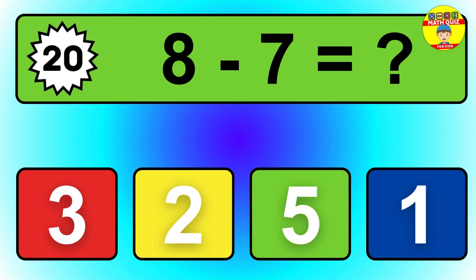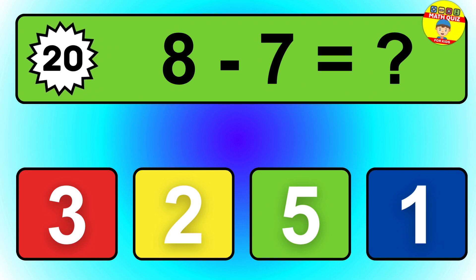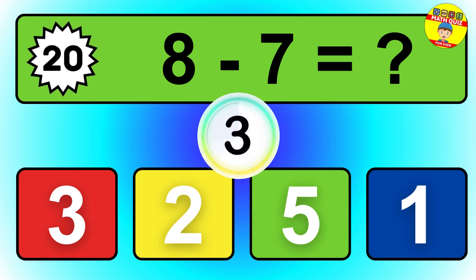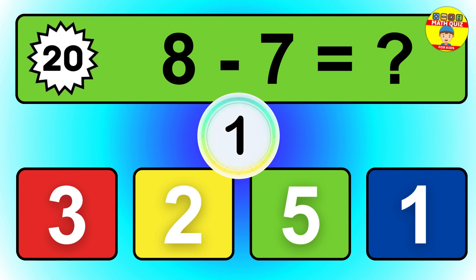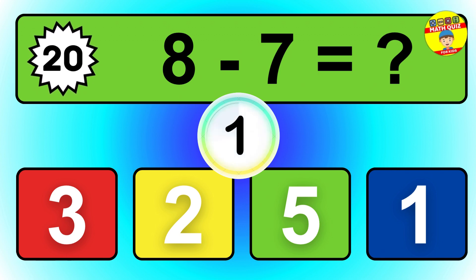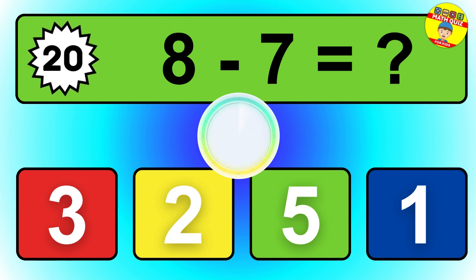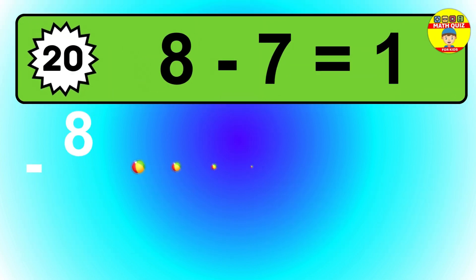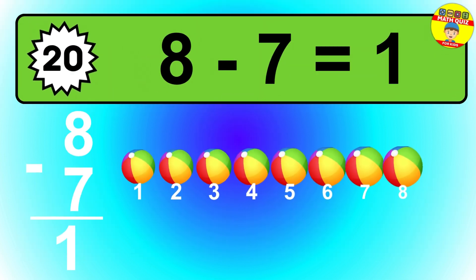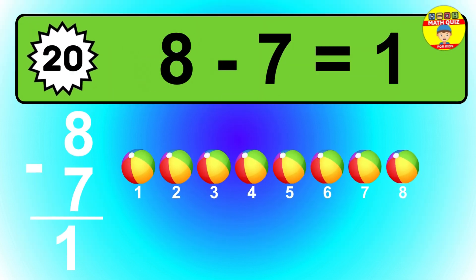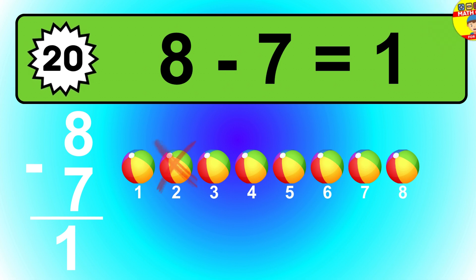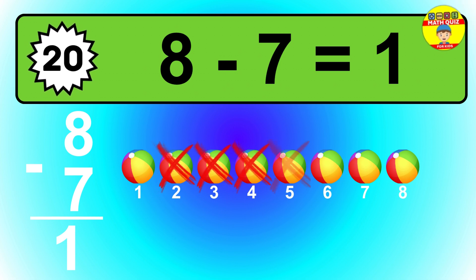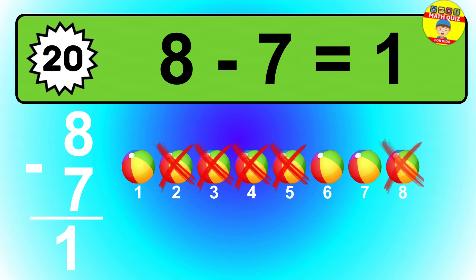Question 20. 8 minus 7 equals what? So the answer is 8 minus 7 is 1. Let's count it: 1.